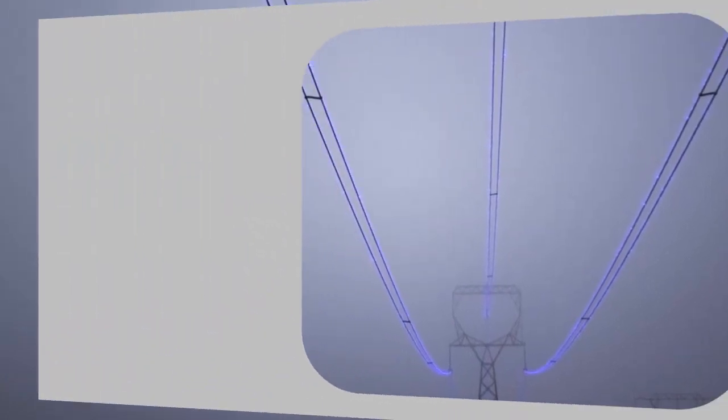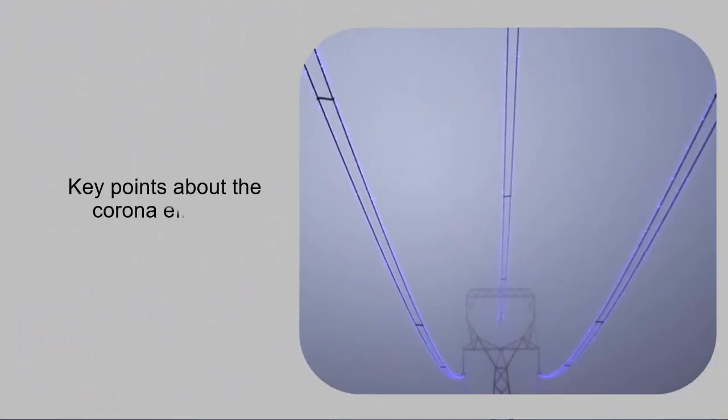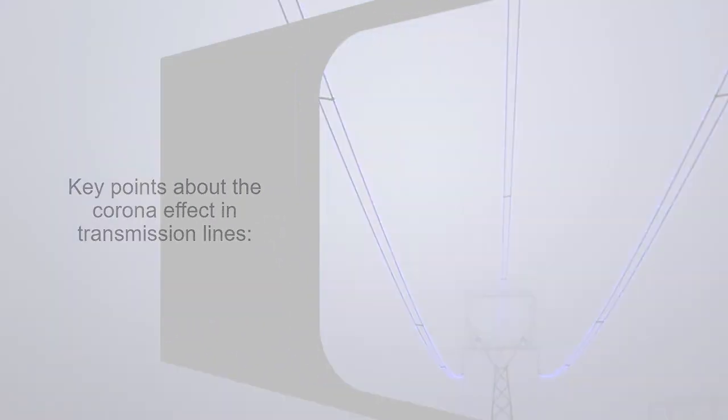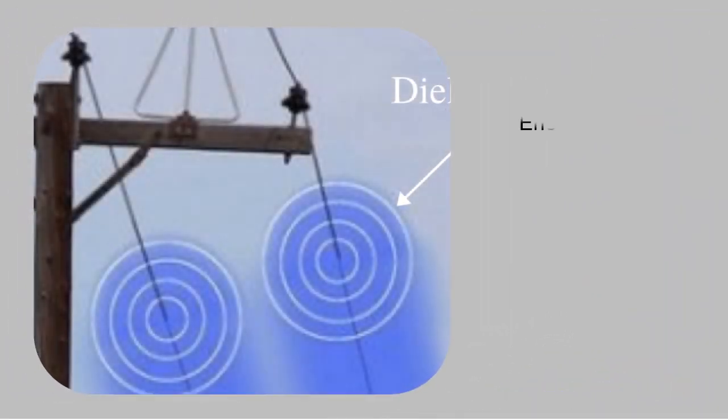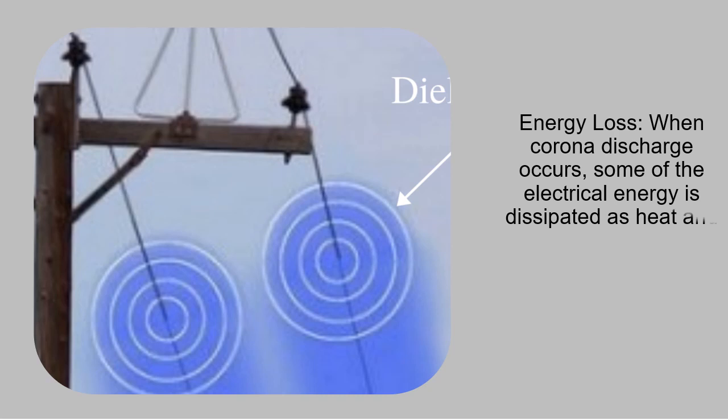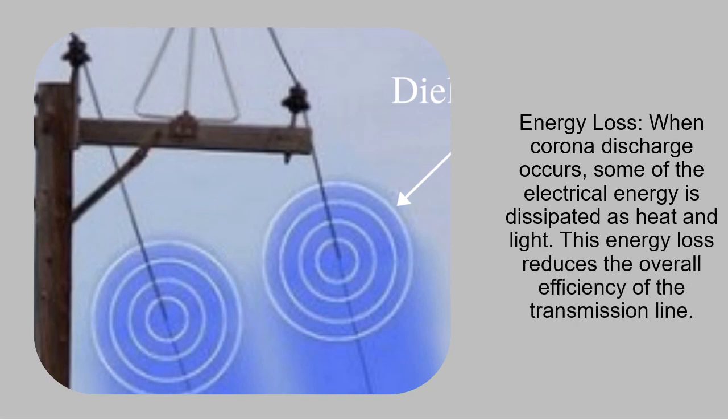Key points about the corona effect in transmission lines. Energy loss: When corona discharge occurs, some of the electrical energy is dissipated as heat and light. This energy loss reduces the overall efficiency of the transmission line.